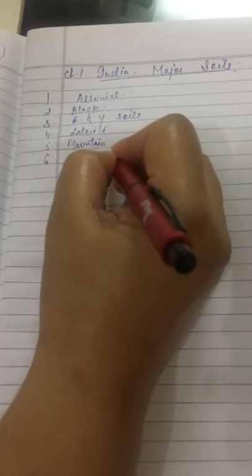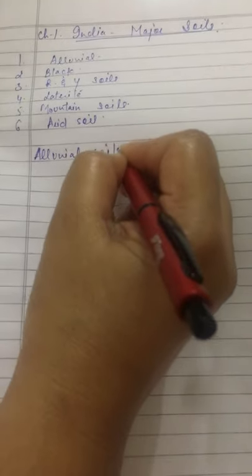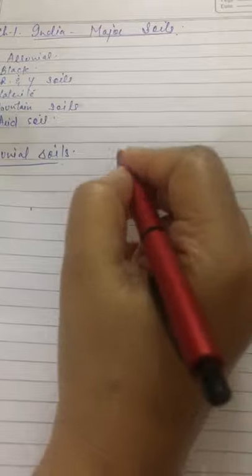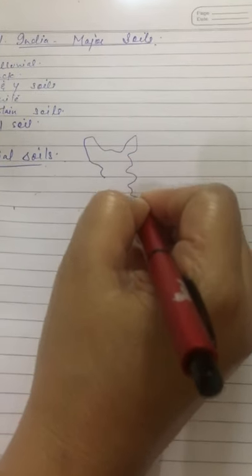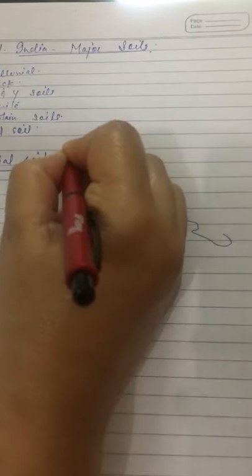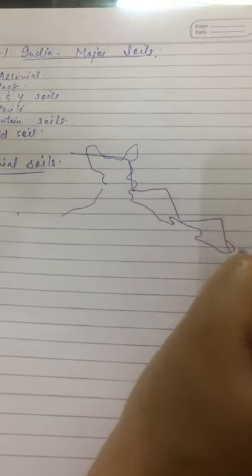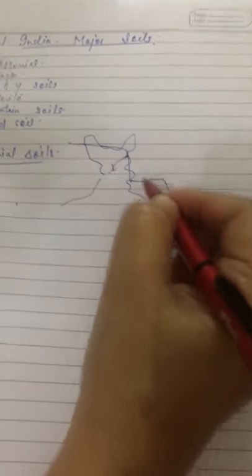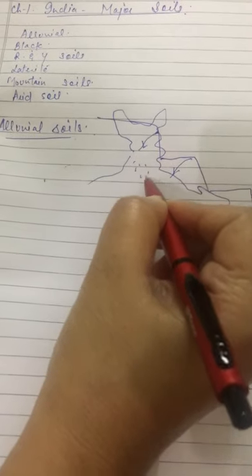So we will start first from the Alluvial Soils. How are the Alluvial Soils formed? Alluvial Soils are formed due to the deposition. India have the Himalayan Mountain Ranges. This is the map of India. These are the mountain ranges of India, the Himalayan Mountains.